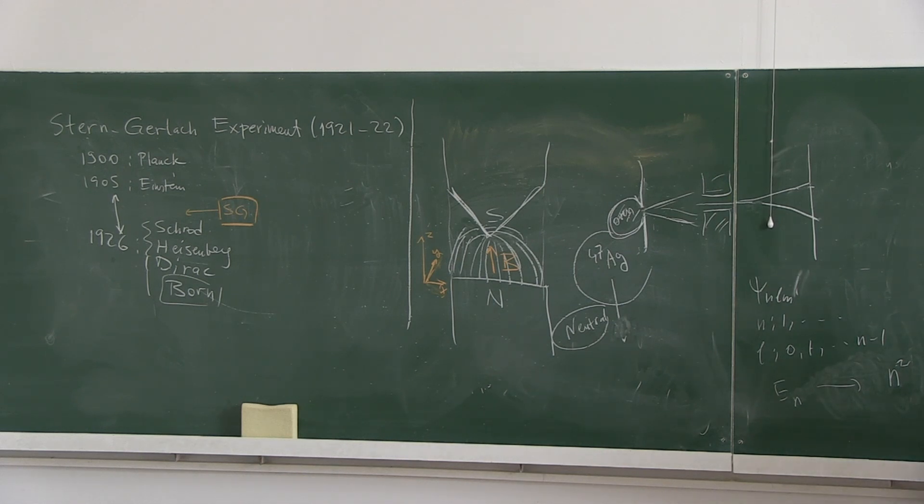But actually, if you include the spin, there is 2S plus 1. So there is a factor of 2 coming from the spin. Degeneracy is 2N squared. That is important for constructing the architecture of the atom starting from hydrogen-like atoms.